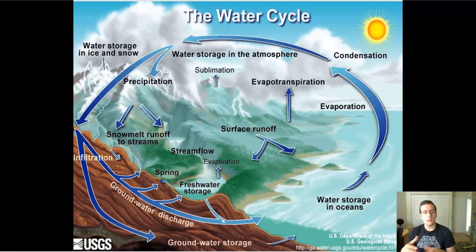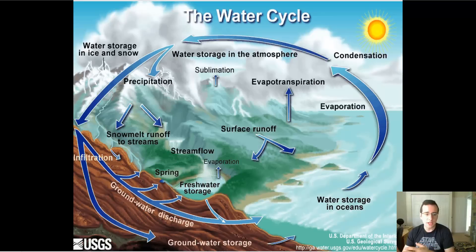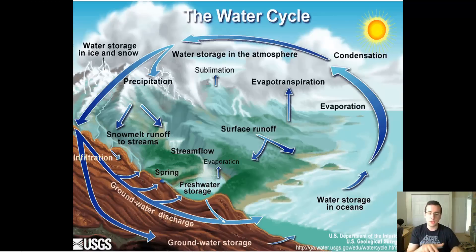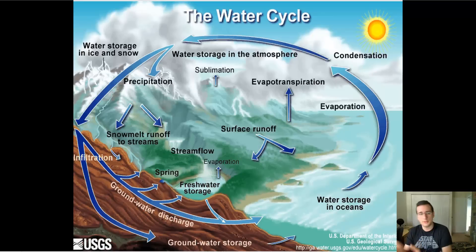Once the water hits the ground, a lot of things will happen. Some of the water will run on the surface — called surface runoff — and end up in rivers, streams, lakes, or sometimes the oceans. Other parts of the water will actually infiltrate or seep into the ground and form what we call groundwater discharge or groundwater systems. Eventually that water from lakes and rivers all ends up in the oceans, and then we start the water cycle process over again.